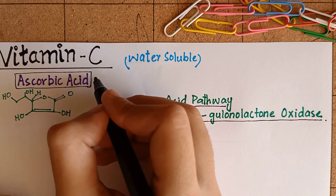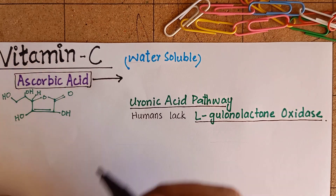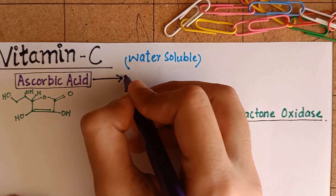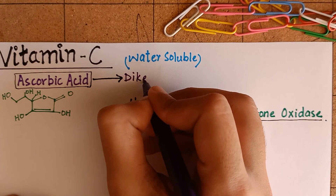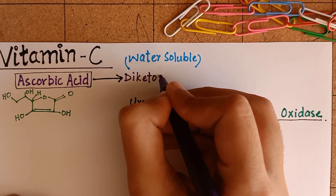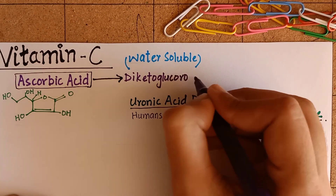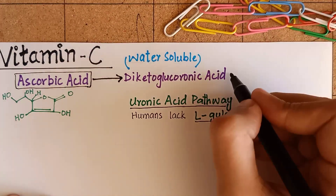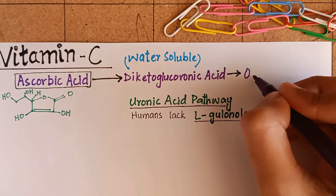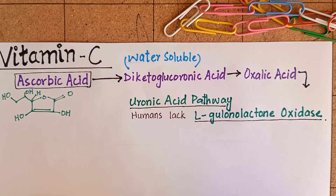As it is a water-soluble vitamin, it cannot be stored in our bodies to a significant extent, and it is excreted in urine as its metabolites such as diketogluconic acid and oxalic acid.